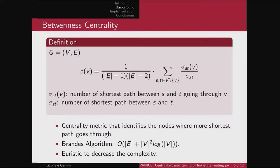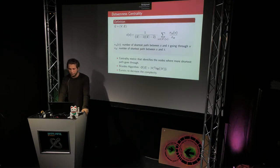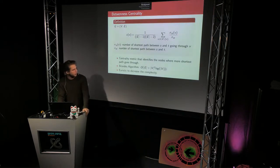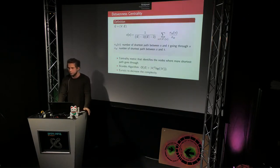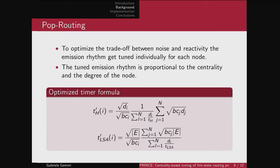Betweenness centrality goes between zero and one. In a line network, the central node will have centrality one and the leaf nodes will have centrality much lower — the more important a node is in the network, the higher the centrality. It's implemented by the Brandes algorithm, which has quadratic complexity with a logarithm, but it's the best available and works for networks not larger than a few hundred nodes. Pop routing calculates the best timer for each node, proportional to the centrality of that node.